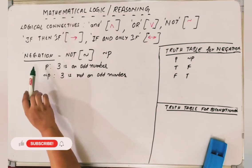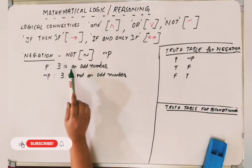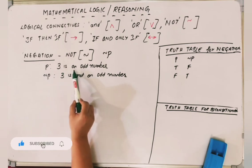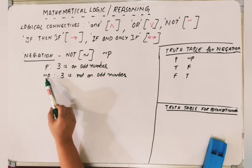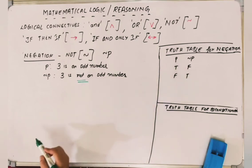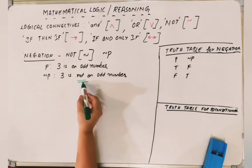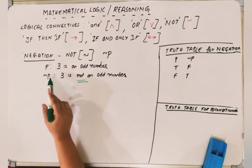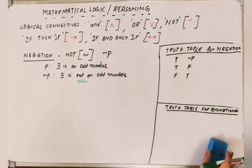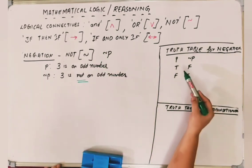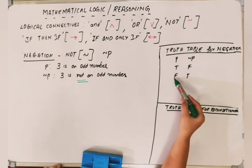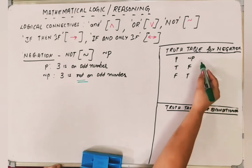Let us talk about negation. If P is '3 is an odd number', then NOT P would be '3 is not an odd number' — we just put a NOT, and that becomes the negation of P. The truth table for negation is simple: if P is true, NOT P is false; if P is false, NOT P is true. It is just the reverse.